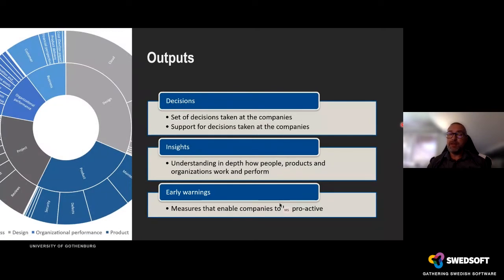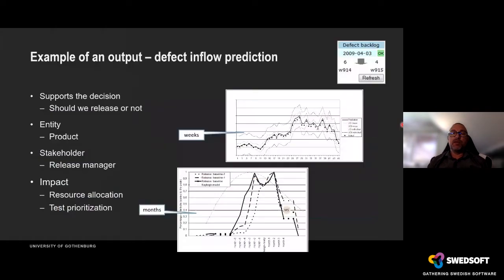The exciting thing about outputs is that we provide a set of decisions. Indicators together with colors and their interpretation give us direct impact on what we should do — guidance on whether to be worried about product performance or not. To give you an example, let's see how we could put together a measurement system around defect inflow. This example of output has been worked on for a few years and dates back to 2009.